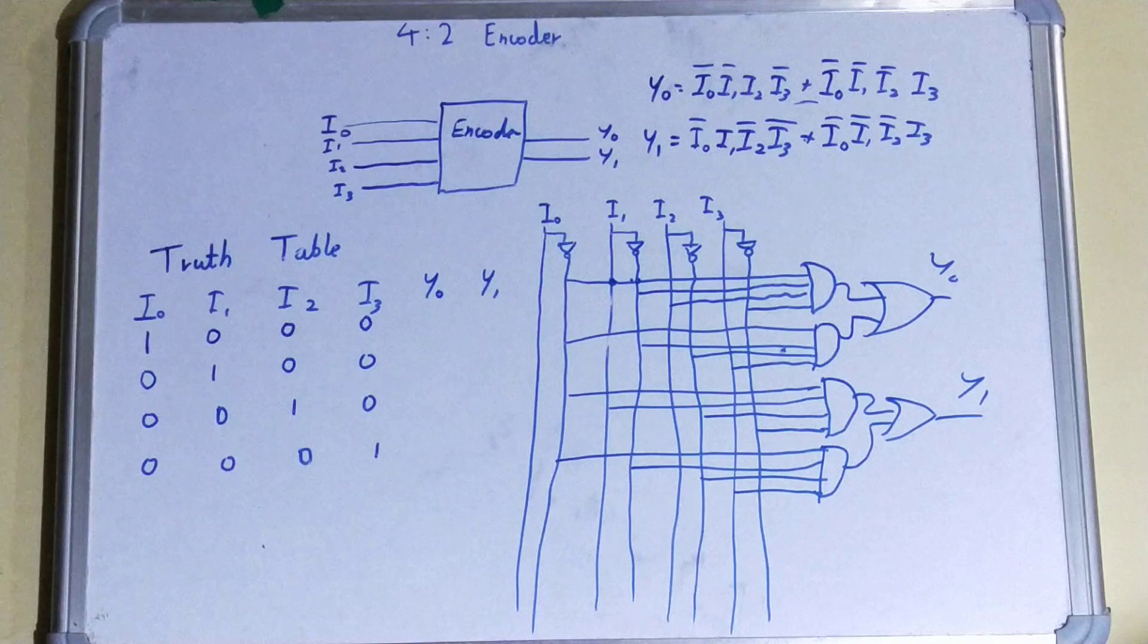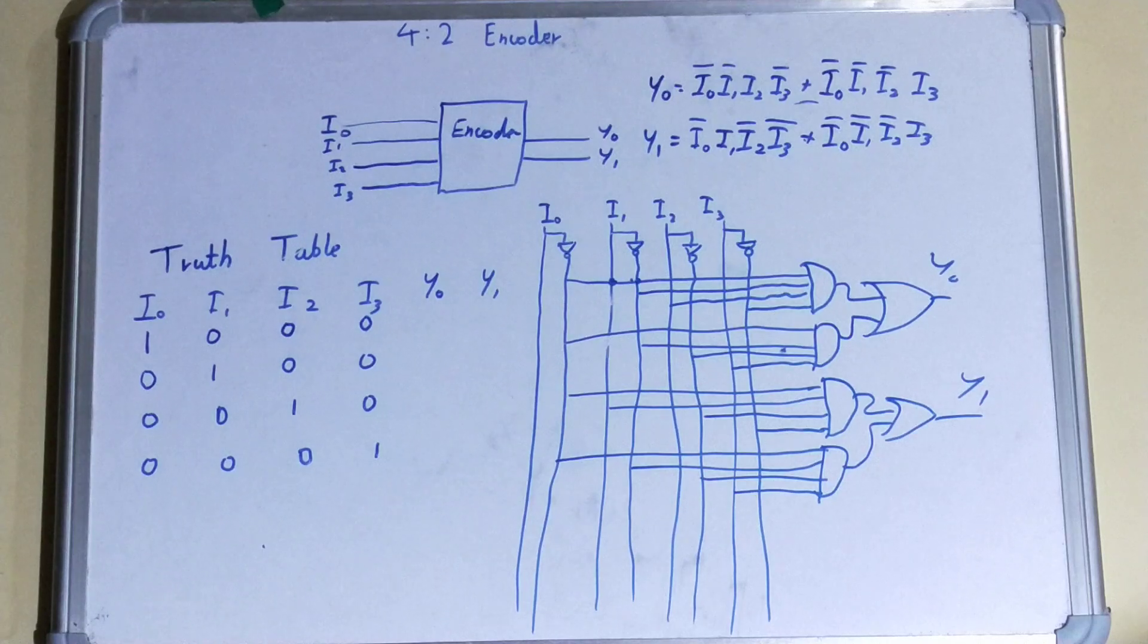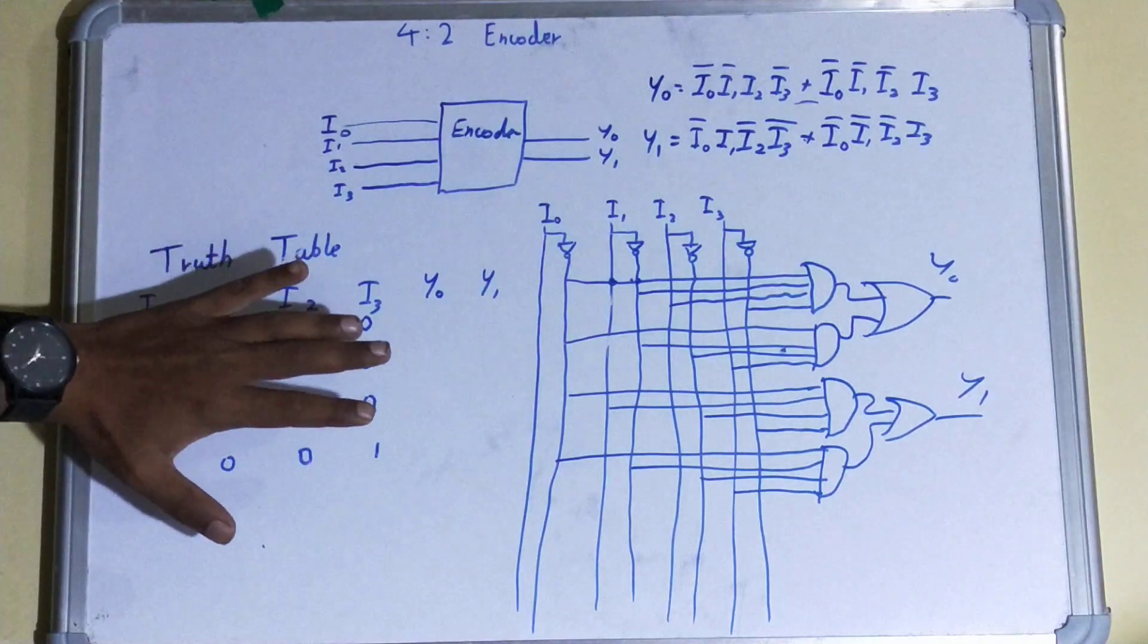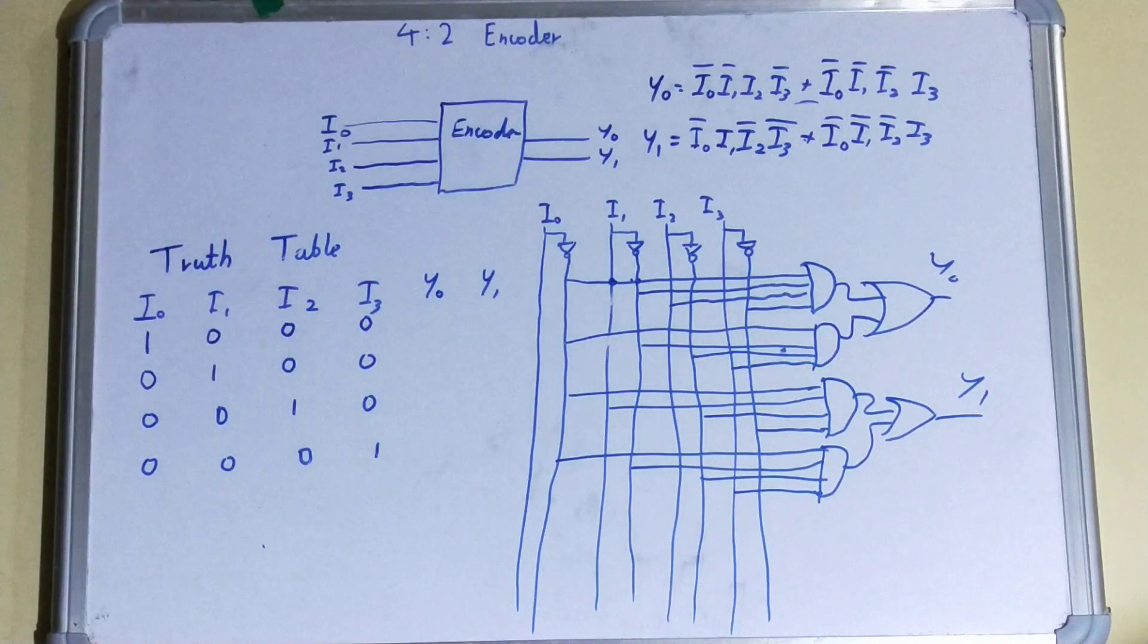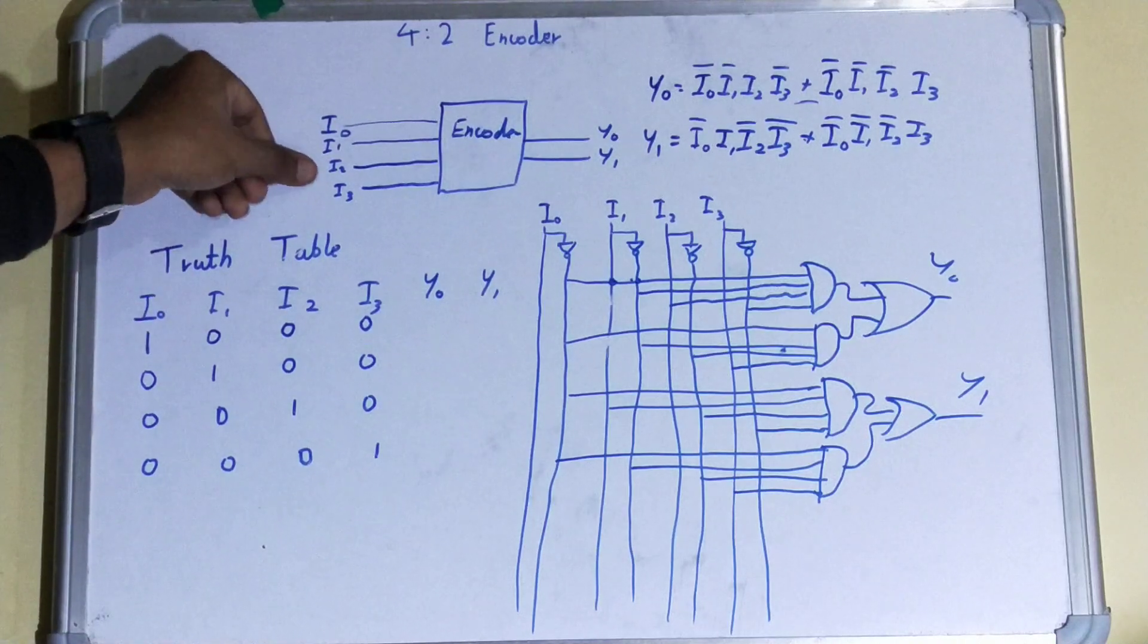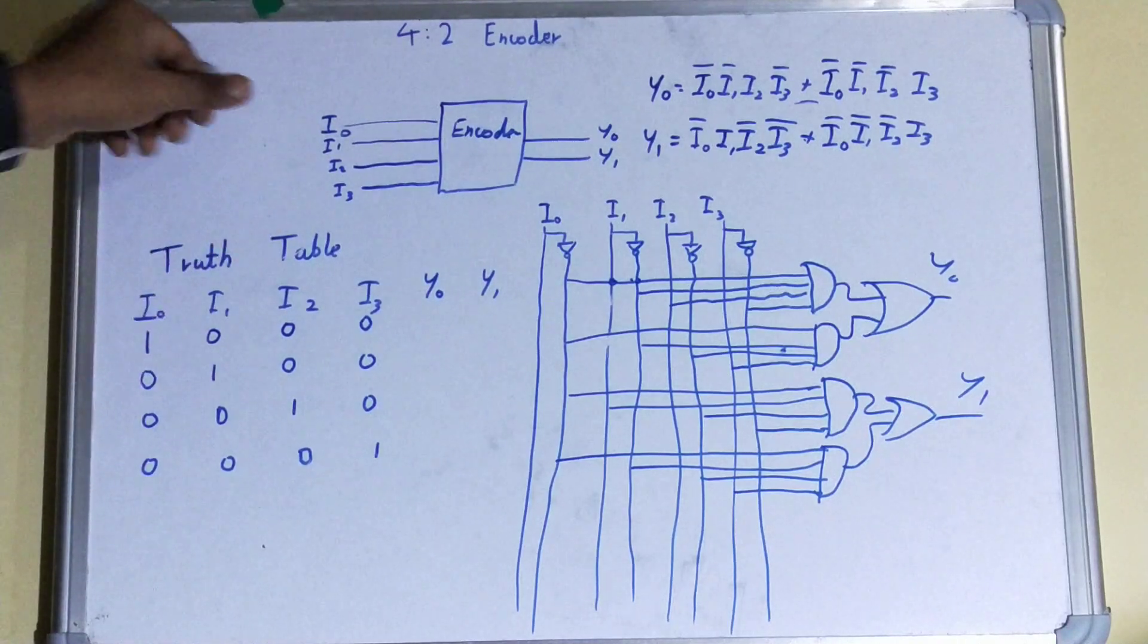Now let's see the truth table of your 4-to-2 encoder. How will we make the truth table? Don't look at the truth table first - you need to understand the working. In an encoder, what happens is at a particular time only one of the inputs is high and the others are low.